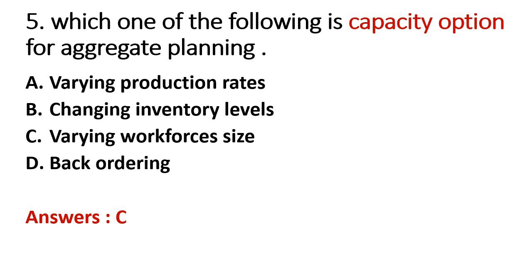Question number five: Which one of the following is a capacity option for aggregate planning? Aggregate planning and operations planning can be part of the same chapter. There are demand-based options as well as capacity-based options. For capacity-based options, we have to change the output capacity to meet the demand, using alternative options to make output capacity equivalent with demand.